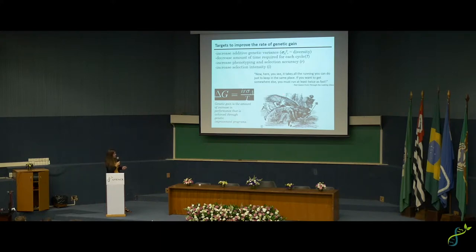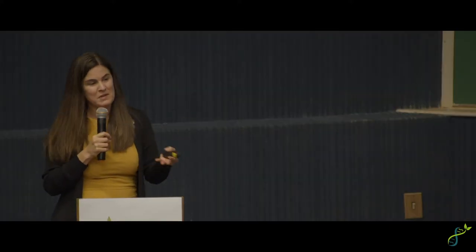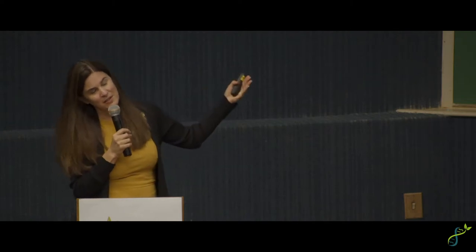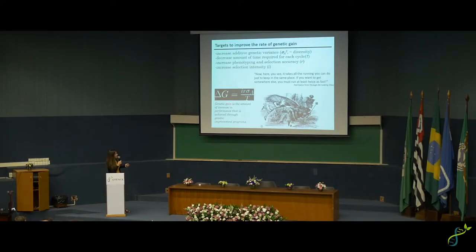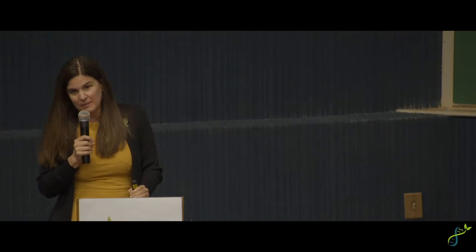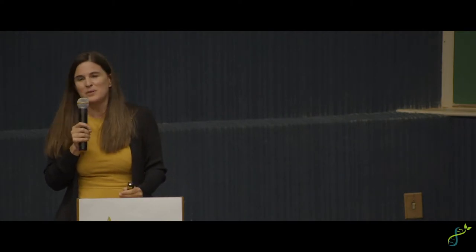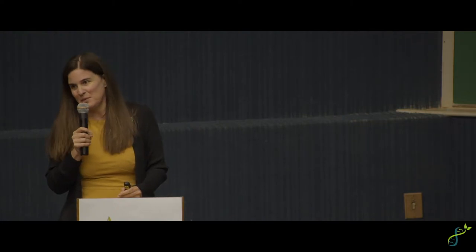There's a quote from Alice in Wonderland: it takes all the running you can do just to stay in one place. To maintain our current rates of genetic gain takes all the effort. The best way to increase gain is to reduce cycle time, which is the goal with genomic prediction. I don't think that UAS have much application in reducing cycle time.